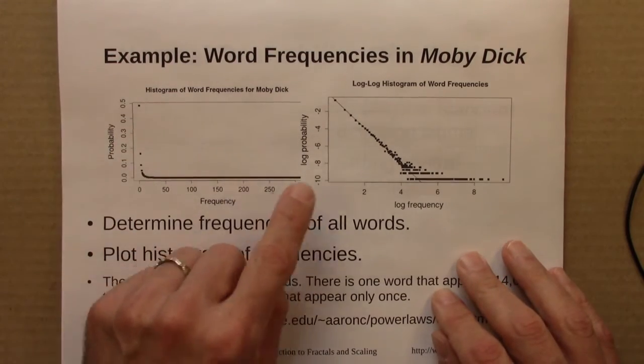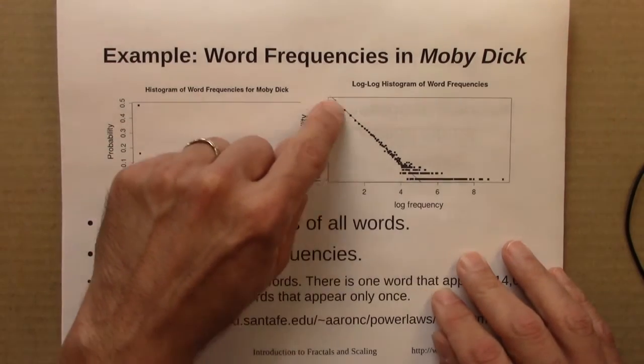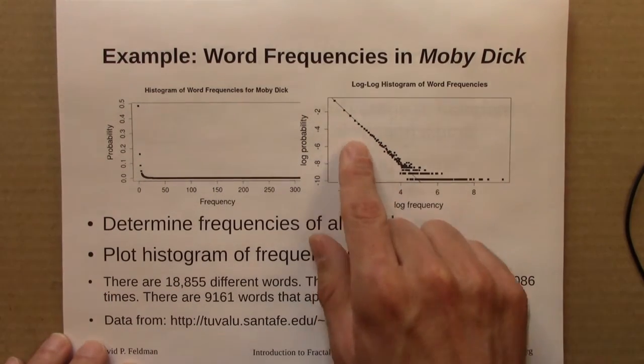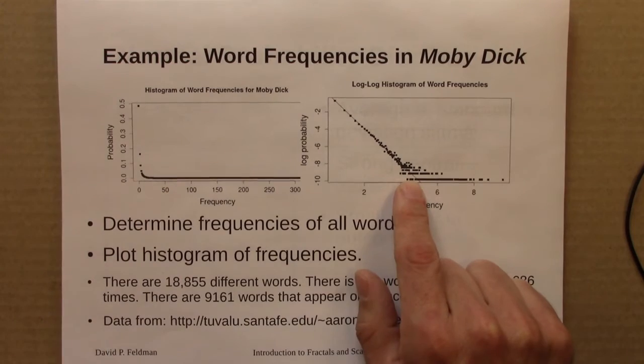So if we took this and we plotted it on a log-log plot, we see a region of rather linear behavior. And so that suggests to us that we would see power law behavior.